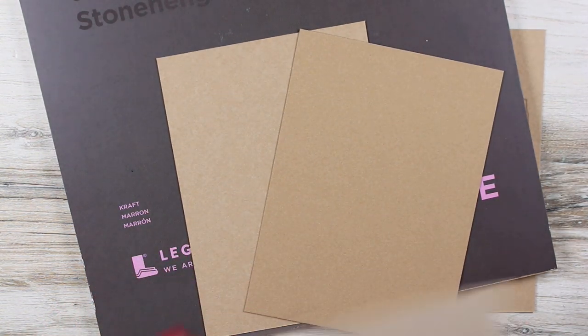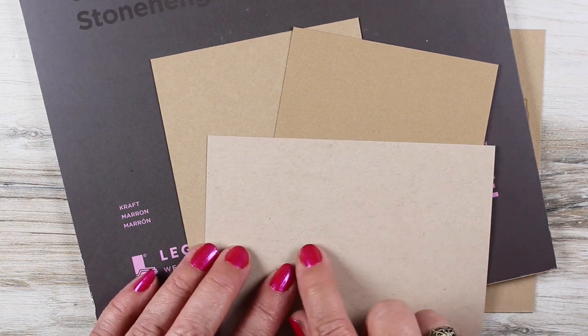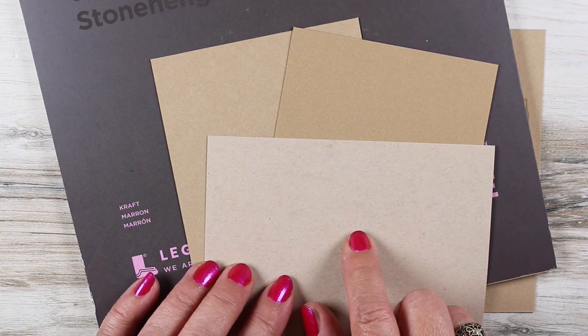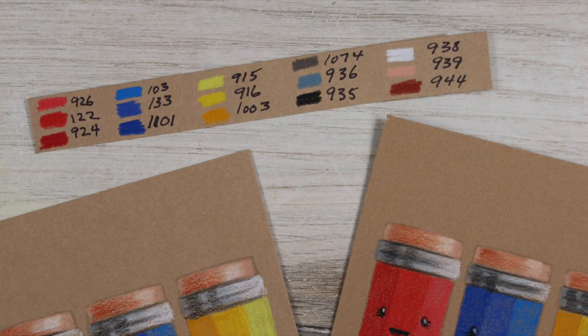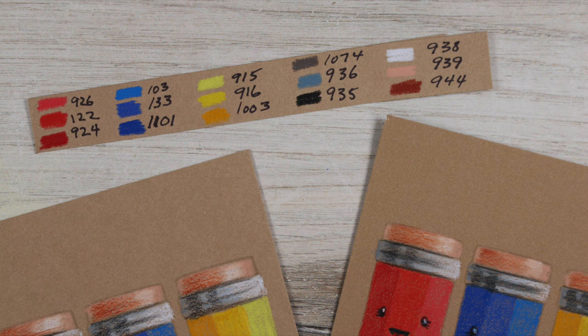This is the paper. There's a front and a back side. The darker is the front side, and this is how it compares to the Neenah Desert Storm, because I've used that quite a bit. This is significantly darker than the Neenah.